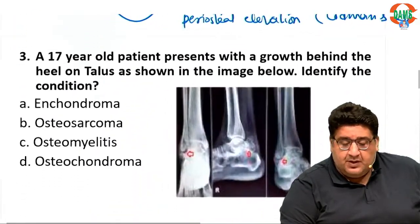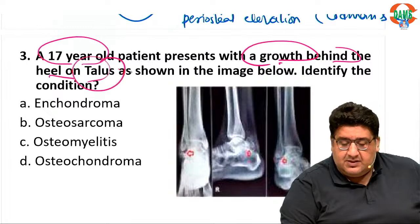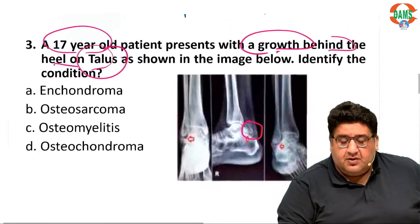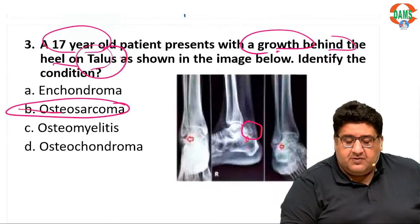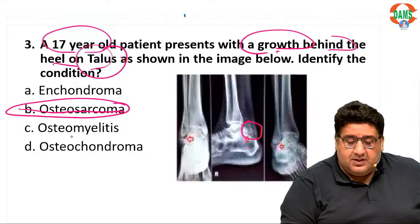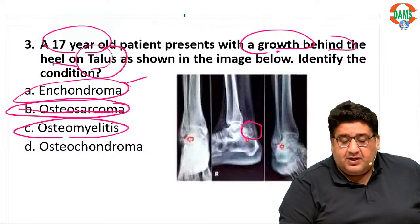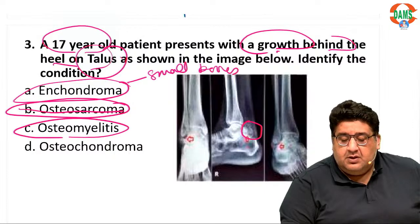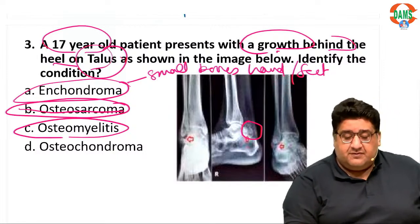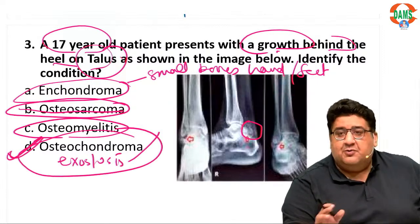For the third question, a 17-year-old patient presents with a growth behind the heel on talus. This kind of growth with or without a stalk — first of all, it cannot be osteosarcoma because there is no periosteal reaction, no Sunray appearance, no Codman's triangle. It cannot be osteomyelitis as it is a growth, not an infection. It can be enchondroma, but enchondroma is usually seen in small bones of hand and feet. So the answer has to be osteochondroma — exostosis.